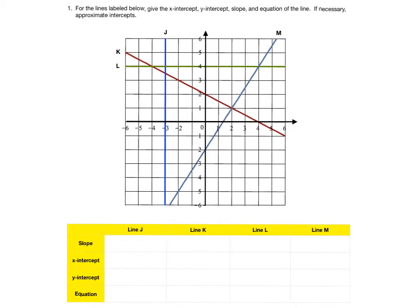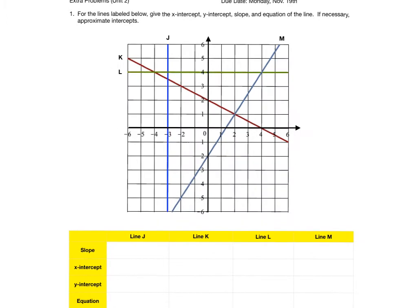And you might have to approximate them. So for line J, the x-intercept, by definition, is the point right there where it crosses the x-axis. Negative 3, comma 0. The x-intercept for line K is this point right here. 4, comma 0.